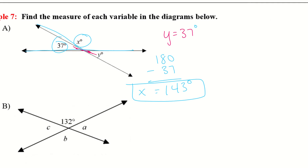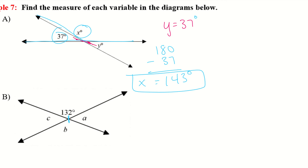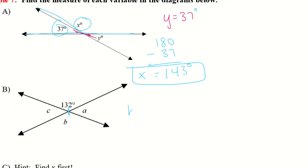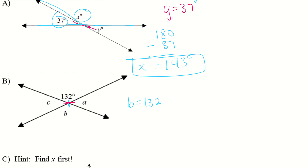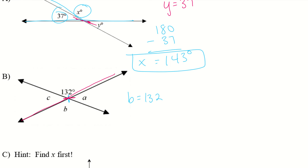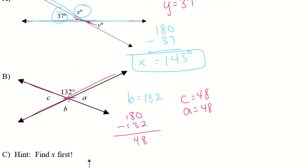Same approach for B. The vertical angle gives us B equals 132. I also notice that C and A are vertical angles, but I have to find one of them first. I'll create a linear pair: 180 minus 132 equals 48. So C equals 48, and since A and C are vertical angles, A equals 48 as well.